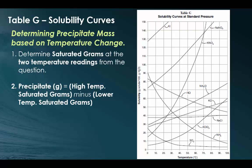So again, using table G, now let's figure out how much precipitate, or how much solid is going to come out of the solution when we change our temperatures. So to do this, we have to determine the saturated grams at the two temperature readings from the question. So the amount of precipitate, the solid that comes out of solution, is equal to the higher temperature saturation grams minus the lower temperature saturation grams.